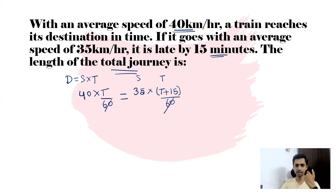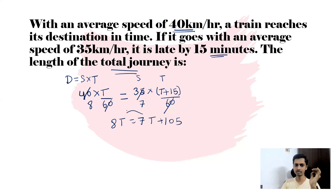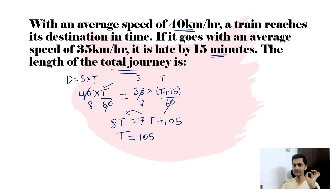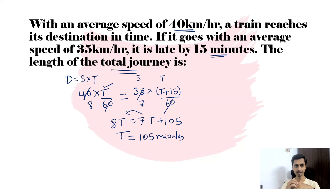Now simplify 40 and 35 using the 5-times table: 8 times and 7 times respectively. So 8t = 7(t + 15), giving 8t = 7t + 105. Bringing variables to one side: 8t − 7t = 105, so t = 105 minutes. Remember, t was kept in minutes throughout, so the actual time is 105 minutes.